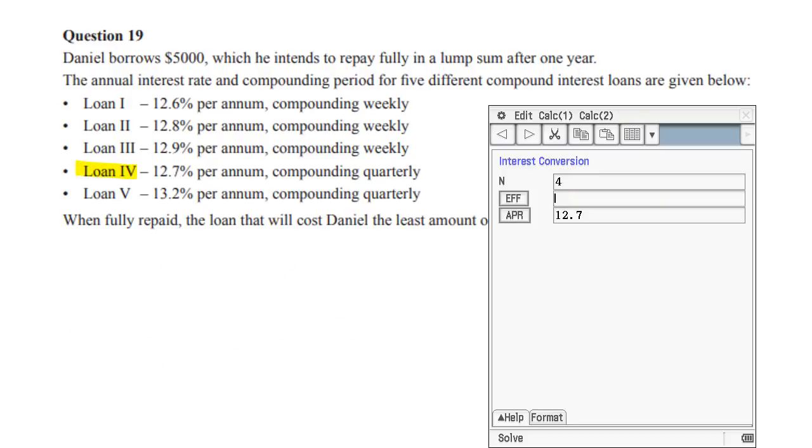All right, let's look at loan four now. And so it says quarterly. So we put a four because there's four quarters in a year and 12.7 is our per annum rate. Click the F button and we get this number, which is a 13.32% per annum comparison rate, as they say in the business.